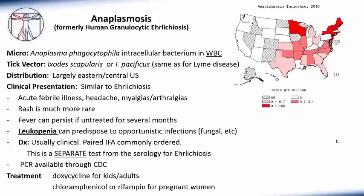The distribution of anaplasmosis is largely in the eastern and central United States. The clinical presentation is very similar to ehrlichiosis — an acute febrile illness with headache, myalgias, and arthralgias — however, rash is very, very rare in anaplasmosis. The fever can persist if untreated for several months. Leukopenia is common, and these two diseases can be very difficult to tell apart. Diagnosis is confirmed with paired immunofluorescent antibodies, ordered as a separate test from those for ehrlichiosis or RMSF. A CDC PCR is available but not commonly ordered. Treatment is doxycycline for children and adults, and chloramphenicol or rifampin for pregnant women.